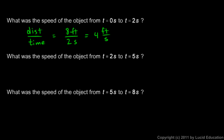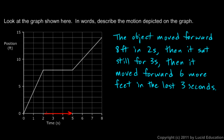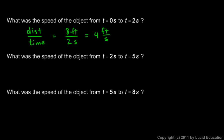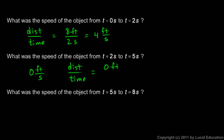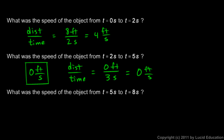We're also asked for the speed from two seconds to five seconds. Looking at the graph, its position wasn't changing — it stayed at position eight the entire time. If position is not changing, speed is zero. You can write zero feet per second, though the units don't really matter since zero is zero in any unit. Using the formula: zero feet divided by three seconds equals zero feet per second.